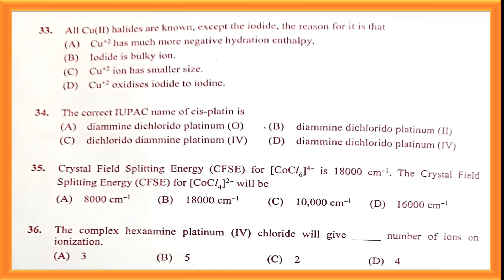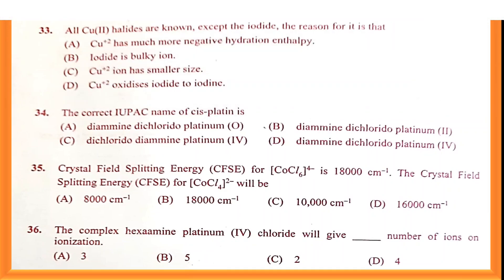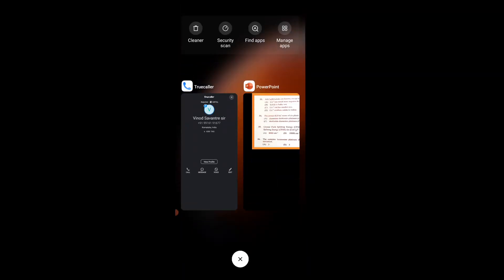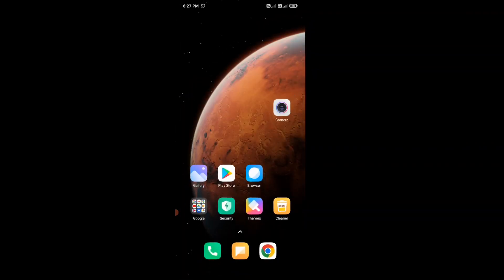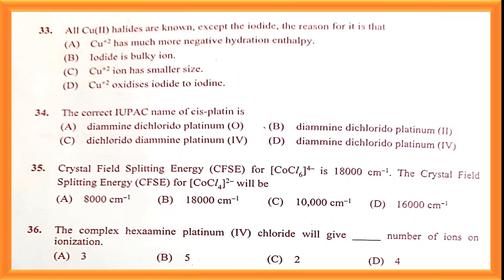Question number thirty-three: all copper(II) halides are known except the iodide. The reason for this is given in option D, which is the correct answer.